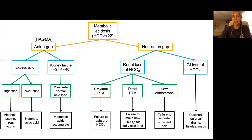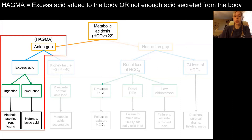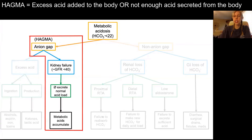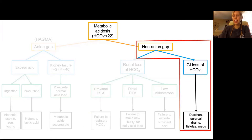Talking about the differential for metabolic acidosis, let's start with the anion gap side — also abbreviated as HAGMA, or high anion gap metabolic acidosis. One of the biggest causes is excess acid, either ingested or produced. You can also get this from kidney failure, which typically doesn't happen until the GFR drops below 40, because you simply can't excrete the normal daily acid load and those acids accumulate in the blood. On the non-anion gap side, a major cause is renal loss of bicarbonate through various types of renal tubular acidosis — see our follow-up video on RTAs. You can also have GI loss of bicarbonate from diarrhea, post-op patients with surgical drains, and various medications.